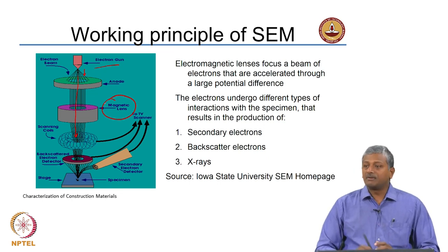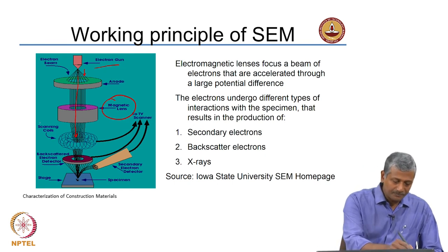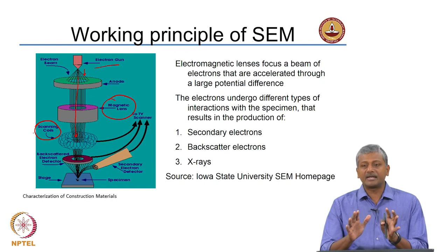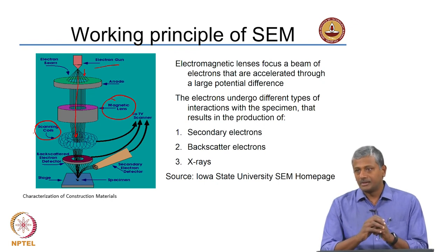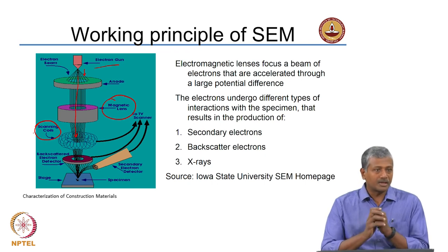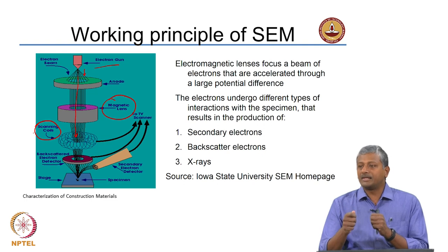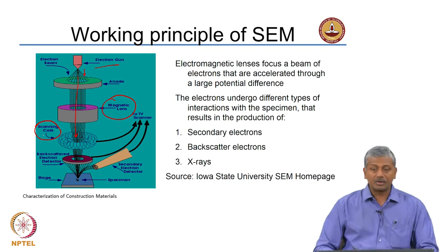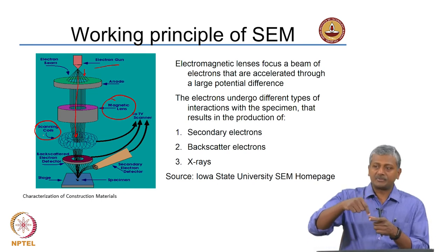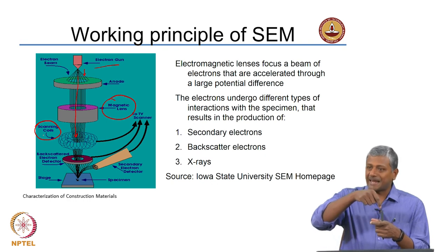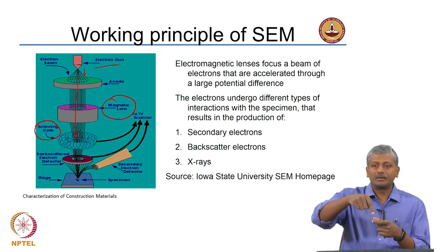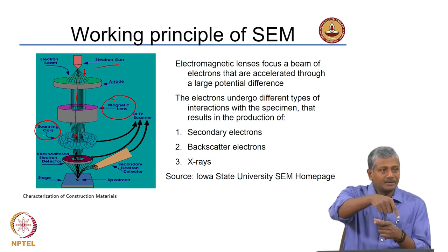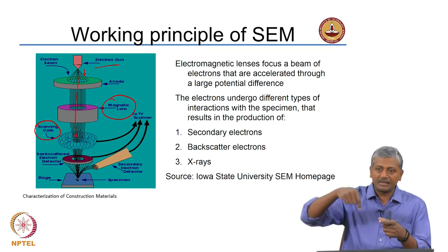After the magnetic lenses we have the objective lens system, which consists of various parts including the scanning coils. In electron microscopy, all the lenses are electromagnetic lenses — not optical lenses. The control of lens focus is done by adjusting the magnetic field generated by these lenses. The scanning coils ensure that the electron beam follows a pattern on the specimen, scanning line by line across the surface, similar to the scanning done in old cathode ray tube monitors.